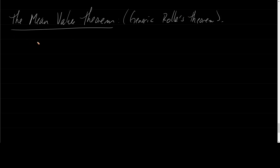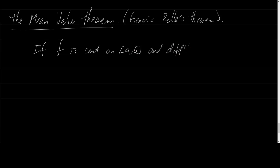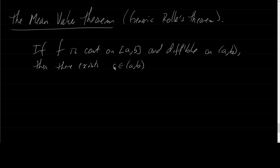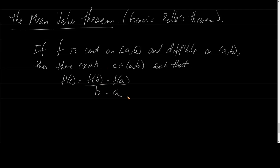Here's what the Mean Value Theorem says: If F is continuous on the closed interval AB, and differentiable on the open interval AB, then there exists a C in the open interval between A and B such that F prime of C is equal to F of B minus F of A, over B minus A.